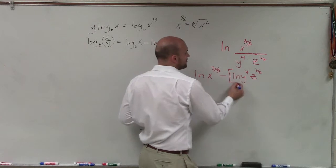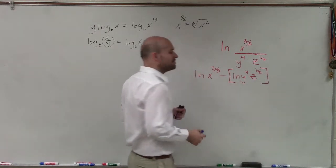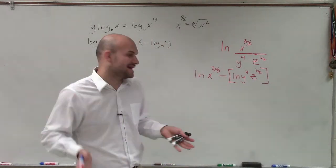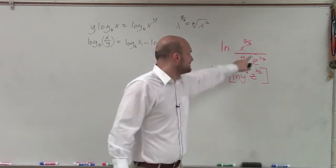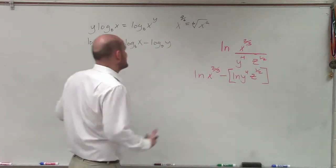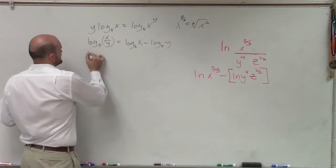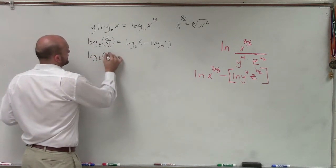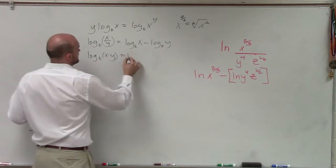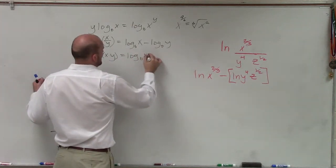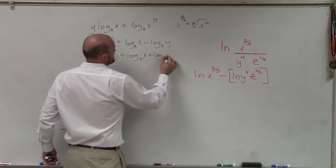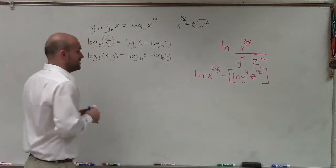And I can still break this apart using my product. So I'm going to put parentheses on there to understand that I am dividing both of these terms. Because now, to apply my product property, remember that states that if I have log base b of x times y, that equals log base b of x plus log base b of y. So therefore,